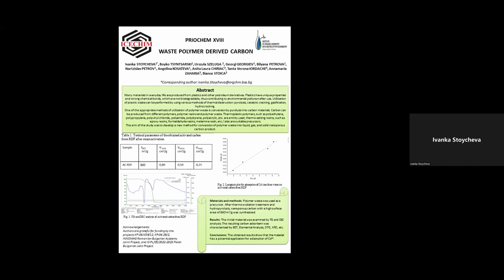Many materials in everyday life are produced from plastic and other petroleum derivatives. Plastics have unique properties and strong chemical bonds which are not biodegradable, thus contributing to environmental pollution after use. Utilization of plastic waste can be performed using various methods of thermal destruction: pyrolysis, catalytic cracking, gasification, hydrocracking. One appropriate method of utilization of polymer waste is conversion by pyrolysis into carbon materials.